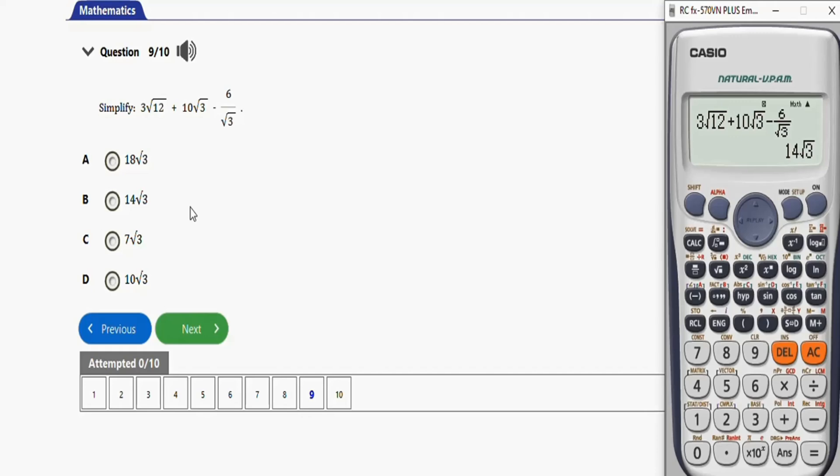So guys this is basically how you can deal with surds, the radical aspect of it, using this Casium calculator for your WASSCE mass. It's as simple as this.